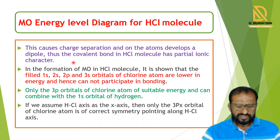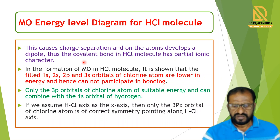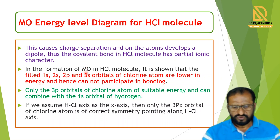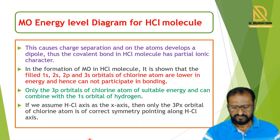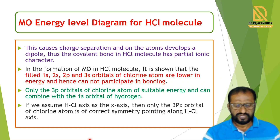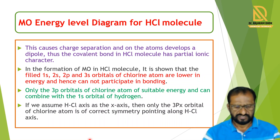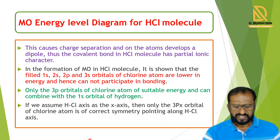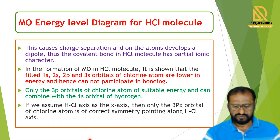The bonding molecular orbital is formed mainly by the electronegative element chlorine, and the anti-bonding molecular orbital is mainly contributed by the electropositive element hydrogen. This causes charge separation and a dipole develops on the atom. HCl is a polar molecule and shows partial ionic character. The filled 1s, 2s, 2p, and 3s atomic orbitals of chlorine are lower in energy compared to hydrogen, and hence cannot participate in bond formation with hydrogen.